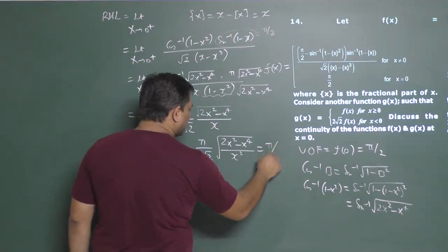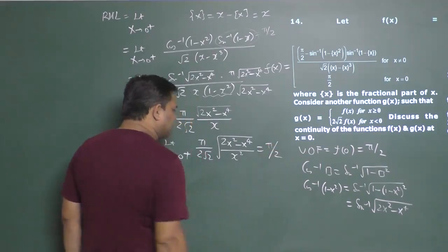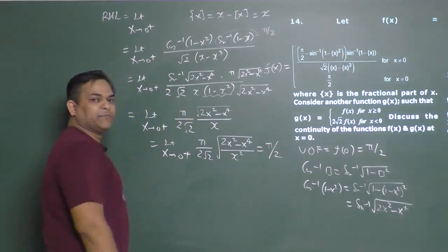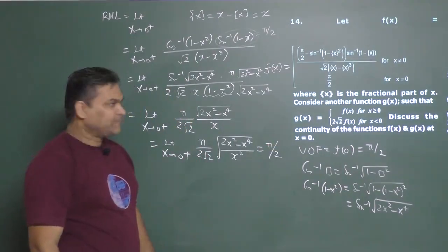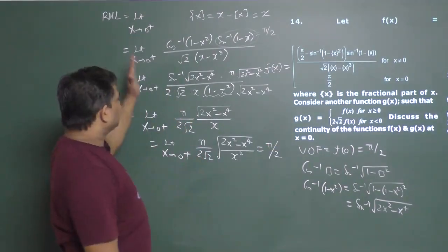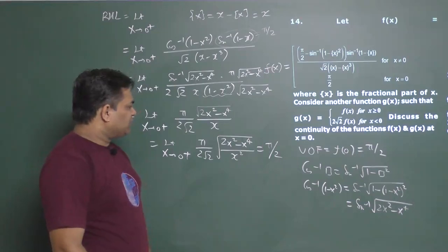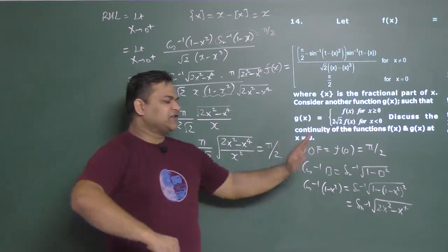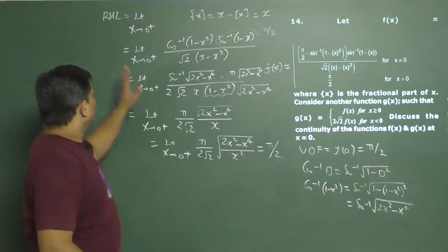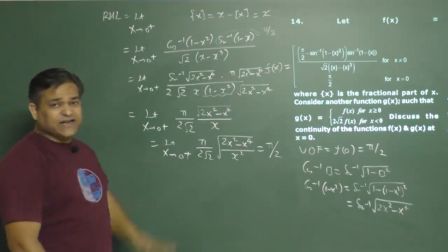So after the hard work, the right-hand limit equals π/2. The function value f(0) is also π/2. What is the right-hand limit? It equals π/2.